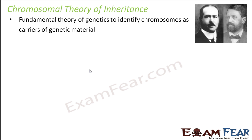Now we will talk about the chromosomal theory of inheritance. This was the fundamental theory of genetics which identified chromosomes as the carriers of genetic material. Before this, genetics laws were all governed by Mendelian inheritance, and Mendel was not aware about the role of chromosomes in carrying genetic material. As per Mendel, there were factors which were the units of inheritance. This theory was the first to tell that chromosomes were the real carriers of genetic material.